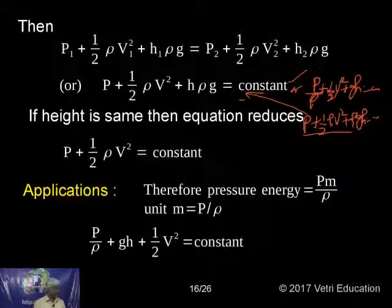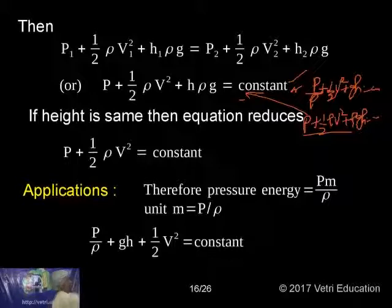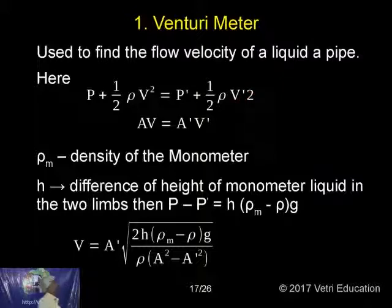What are the applications? There are two equations — be careful: P by rho plus GH plus half V squared equals constant. The pressure energy PM by rho gives P by rho. The first application is Venturimeter.